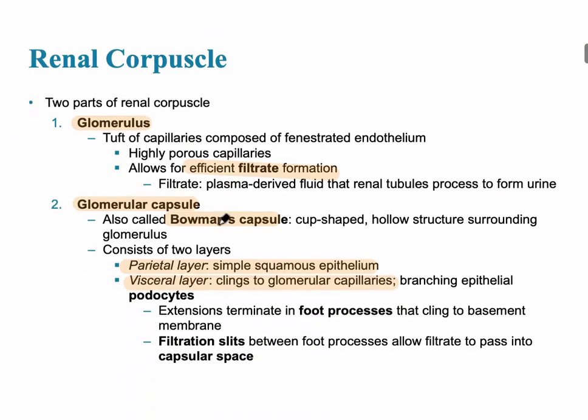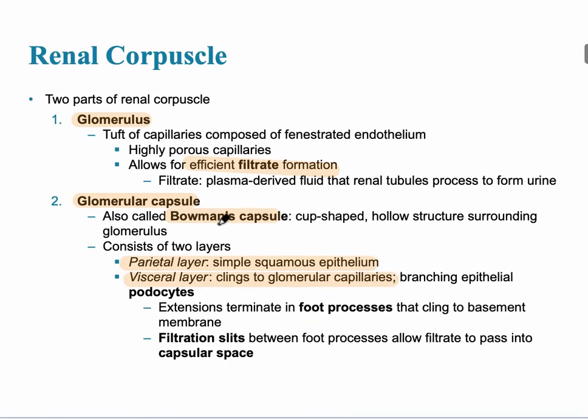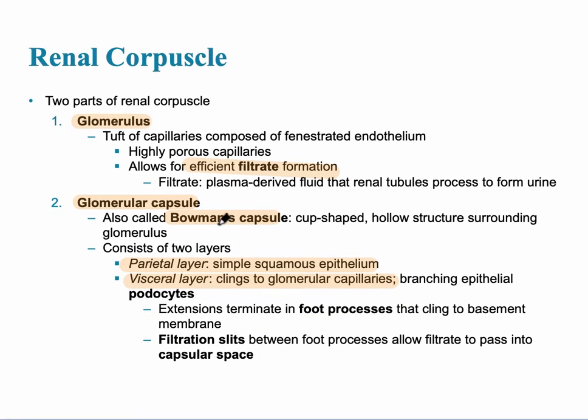The renal corpuscle has two main parts within it. It has a high pressure capillary bed, which is unlike any other throughout the body, and it allows for filtrate formation. This is what is removed from the blood that then leads into the next part of the nephron called the renal tubule.